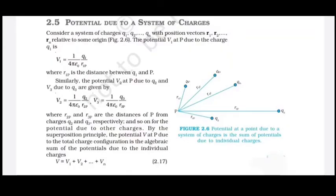In Chapter 2 on electric potential and capacitance, we take up the new topic: potential due to a system of charges. For a system of charges q1, q2, q3 up to qn, we draw a diagram where their respective position vectors from reference point P are given as r1p, r2p, r3p, up to rnp.